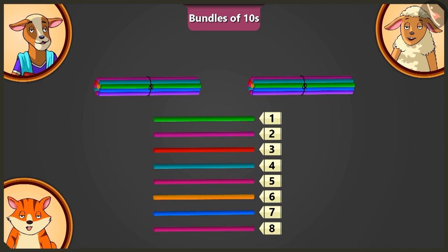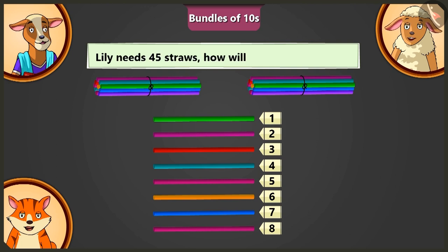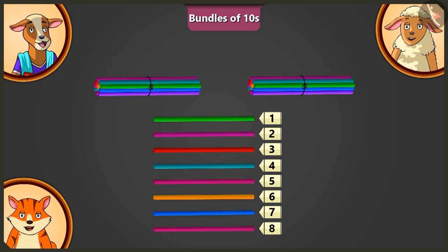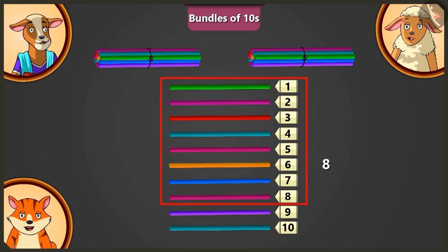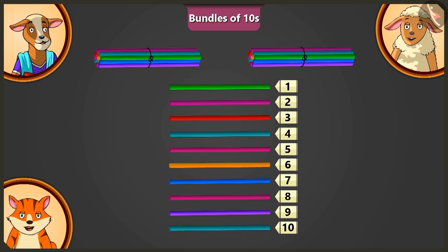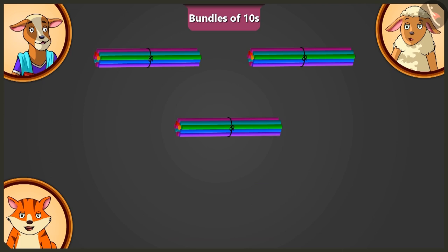Oh wow! These are all the straws I want. Corrie ma'am, but I need 45 straws. How will we count 45 straws? Look, Lily, there are 2 bundles of 10 and 8 straws here. Now tell me, how many straws will we have to add to 8 straws to make a third bundle of 10? If we add 2 straws to 8 straws, there will be 10 straws. Like this, we can make a third bundle of 10.